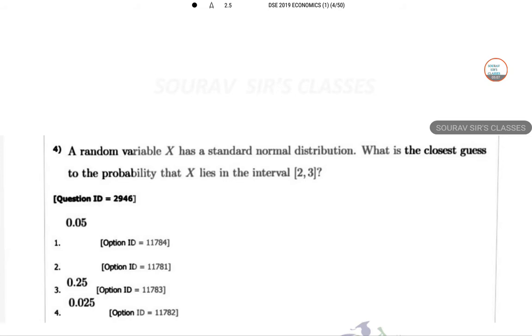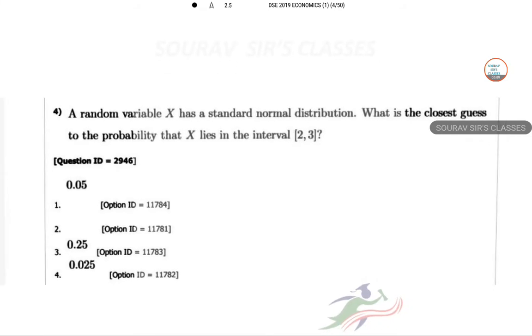Next, a random variable X has a standard normal distribution. What is the closest guess to the probability that X lies between 2 and 3? The 95 percent, 0.95, which is a standard normal. As it's a symmetric structure, so we can do it.